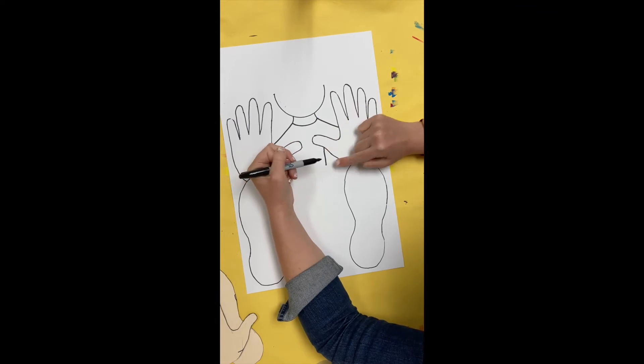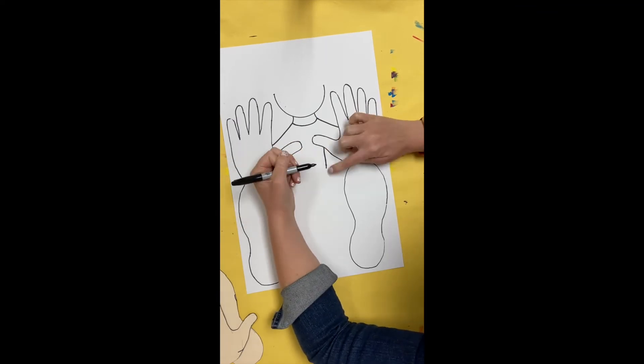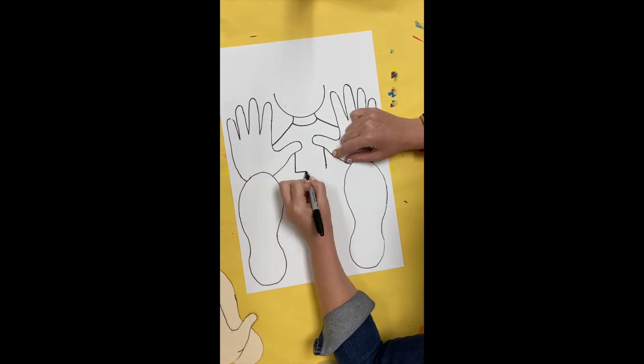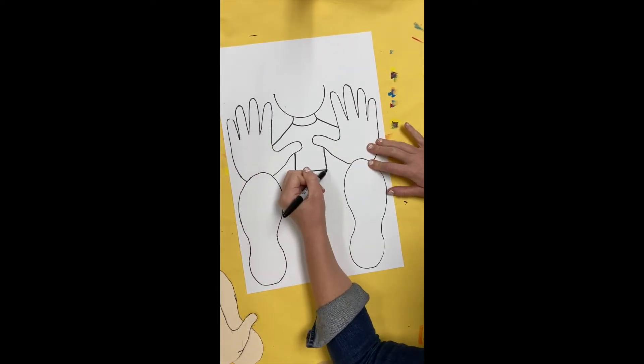From there, I am going to come straight down to right about the same height as the top of my shoe and draw another straight line down. Then I am going to connect them across for my shirt.